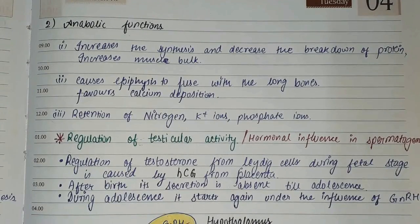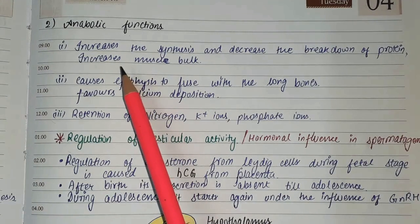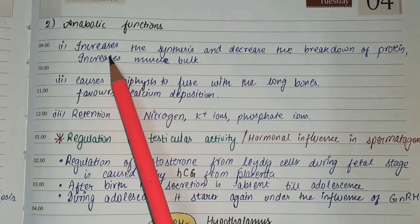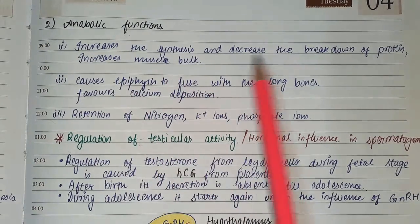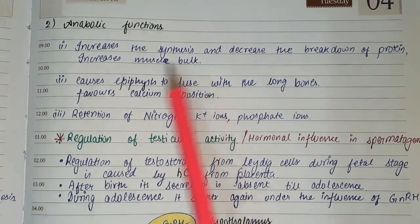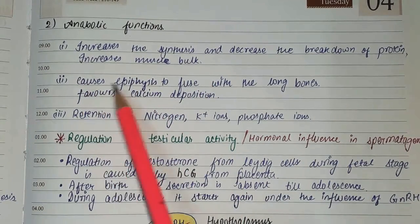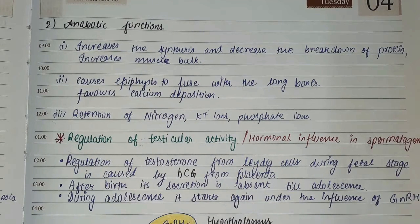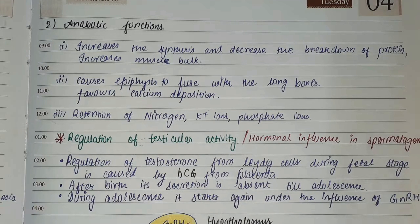The anabolic functions: anabolic means building up, catabolic means breakdown. Testosterone increases the synthesis and decreases the breakdown of protein, thereby increasing muscle bulk. It causes epiphyses to fuse with the long bones and also favors calcium deposition. Additionally, it causes retention of nitrogen, potassium ions, and phosphate ions.